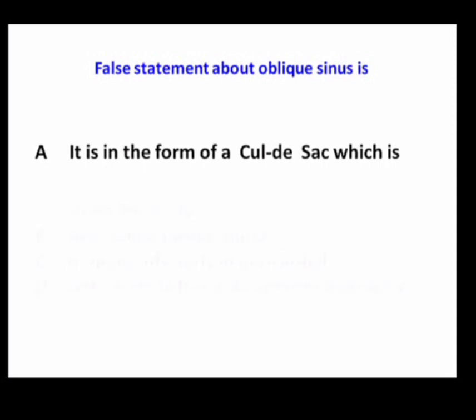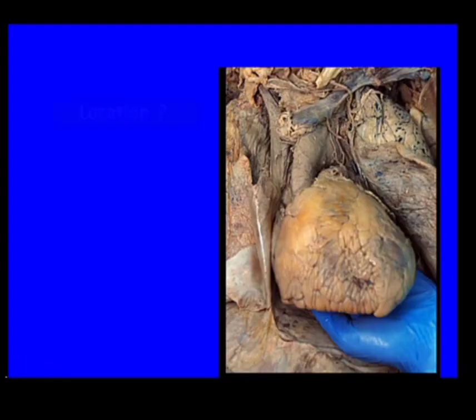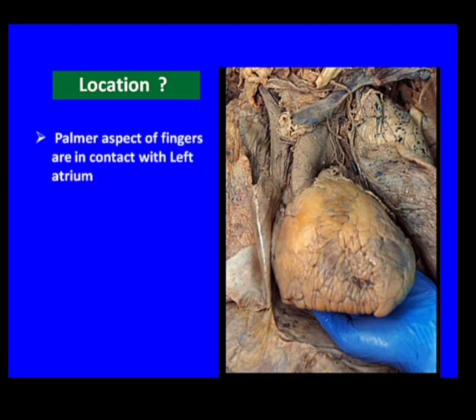False statement about oblique sinus: It is in the form of a cul-de-sac which opens inferiorly — true. It is also called the caudal bursa — true. It opens inferiorly into the pericardial cavity — true. Left ventricle forms its anterior boundary — false. It is the left atrium which forms the anterior boundary of the oblique sinus.